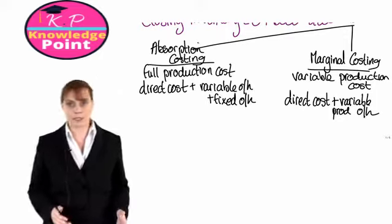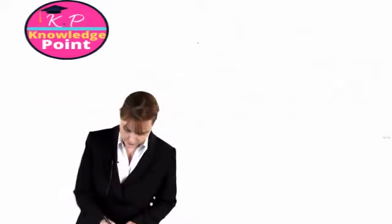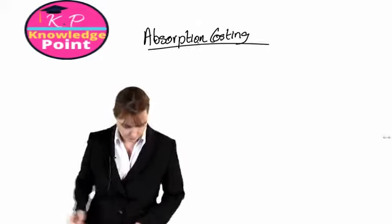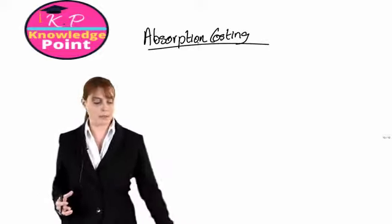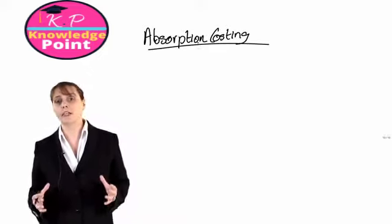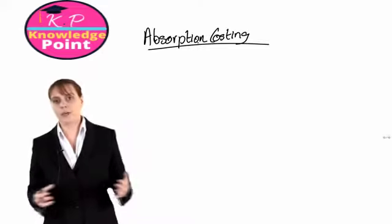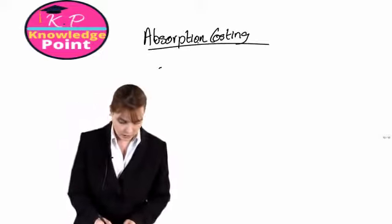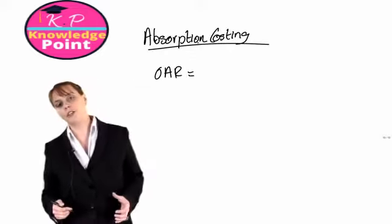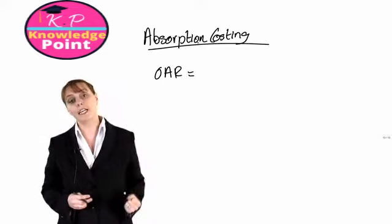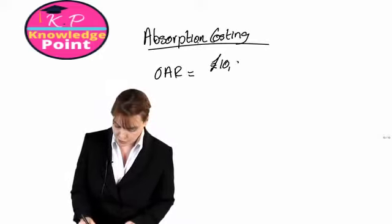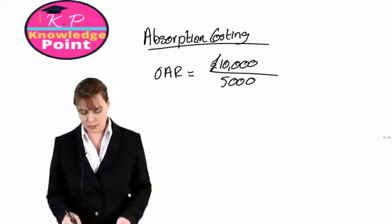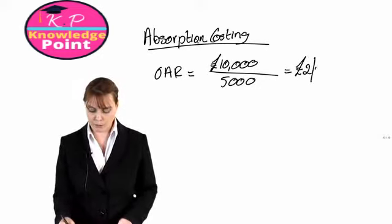For our absorption costing profit calculation, we first need to consider any under or over absorption. Our overhead absorption rate is budgeted fixed production overhead of £10,000 divided by budgeted activity of 5,000 units, giving an overhead absorption rate of £2 per unit.